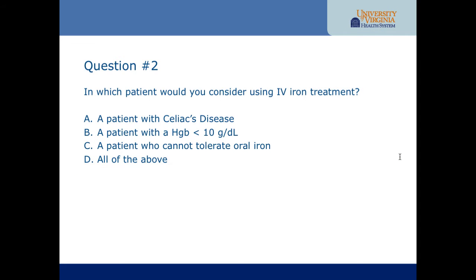Question two: in which patient would you consider using IV iron treatment? A patient with celiac disease, a patient with hemoglobin less than 10, or a patient who cannot tolerate oral iron? The answer is all of the above. When hemoglobin is less than 10, consider IV iron first. When hemoglobin is greater than 10, try oral iron first, moving to IV only if there's intolerance or no response. Also consider IV iron first for those with malabsorption such as H. pylori infection or celiac disease.